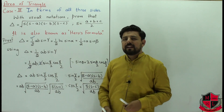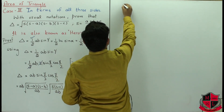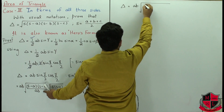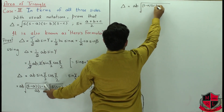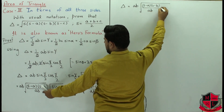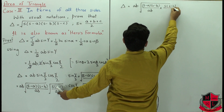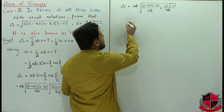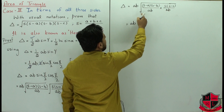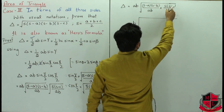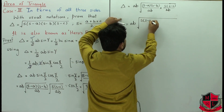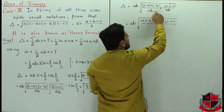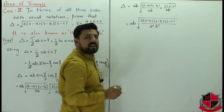After substituting, we have area equals ab times the square root of (s minus a)(s minus b) over ab, multiplied by the square root of s(s minus c) over ab. We combine these under a single square root in the numerator, giving us s times (s minus a) times (s minus b) times (s minus c), over a squared b squared in the denominator.